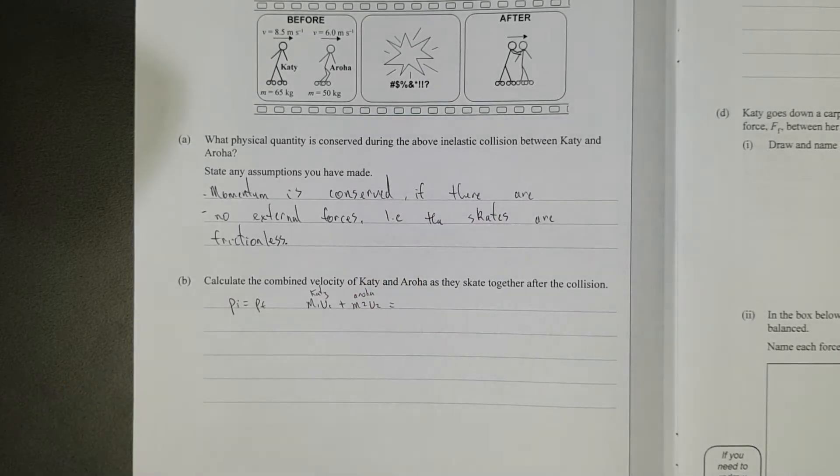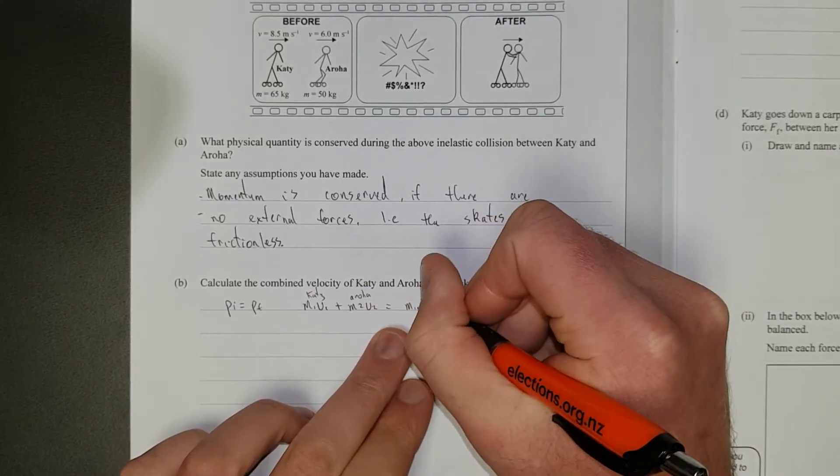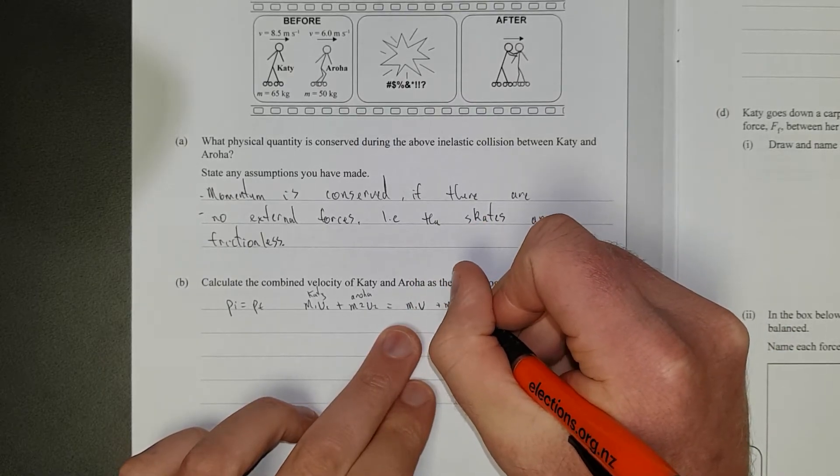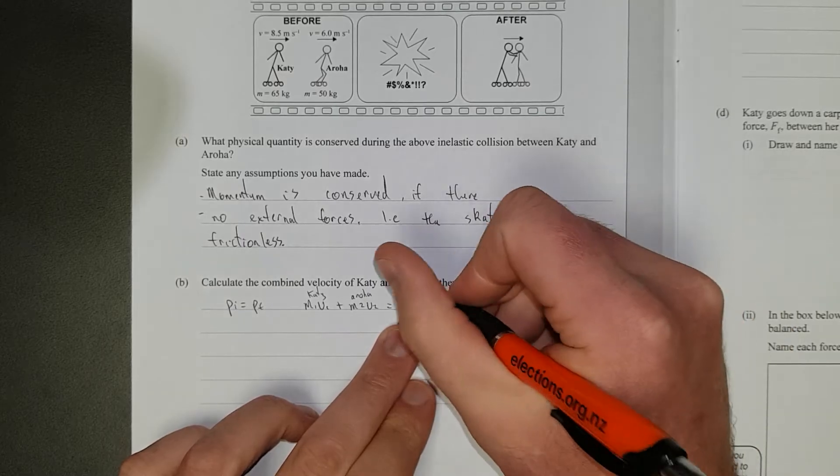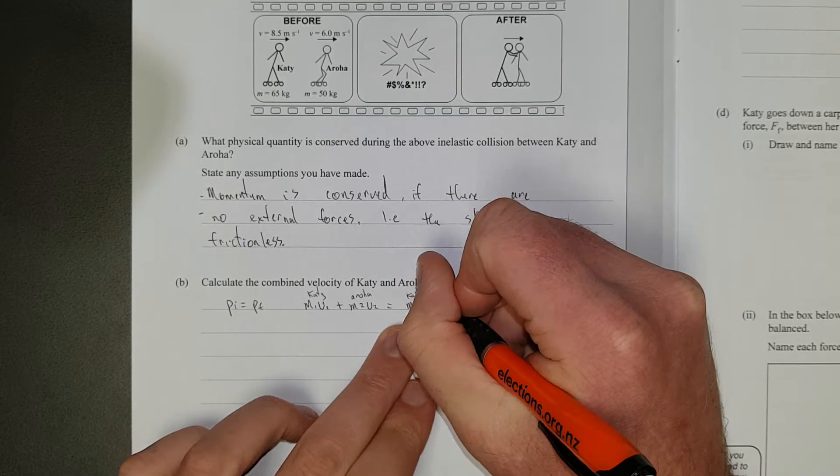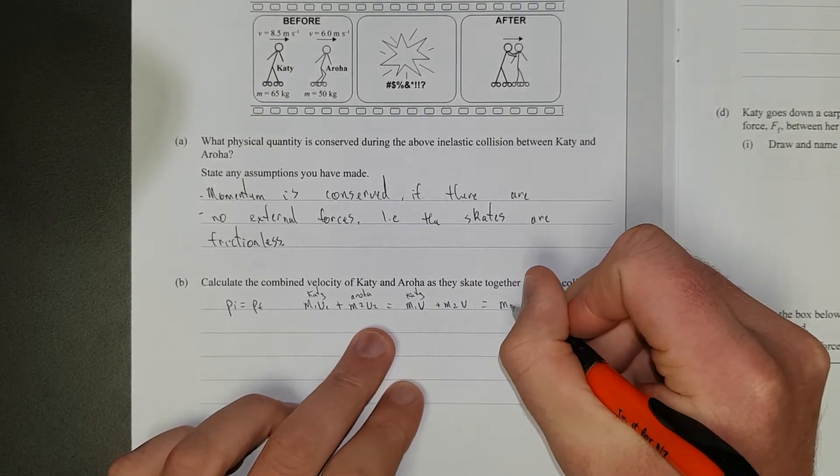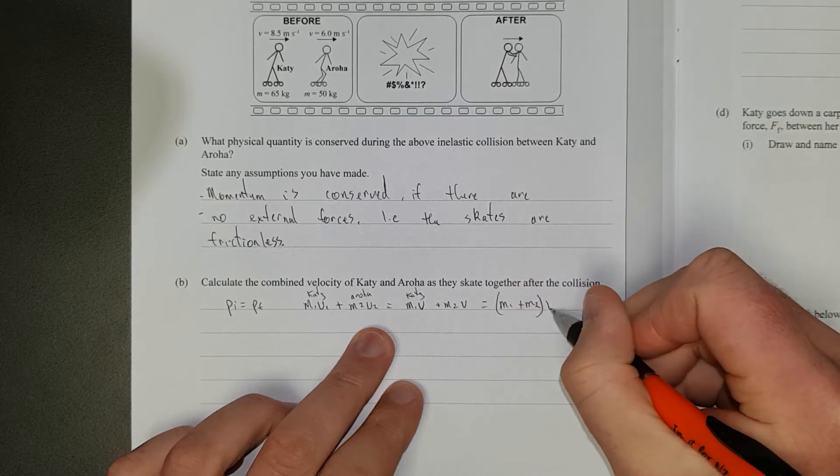Yeah, and now we're going to have m1, because they're moving together at the same speed, we'll just say v plus m2 v, and again, this is Katie, I'll put Katie up here, and that there is Aroha. An easier way to write this is just to have m1 plus m2 take out the common factor, which is v.